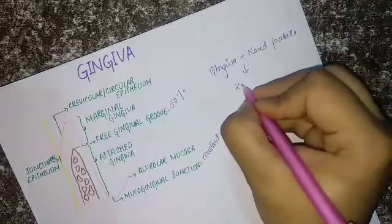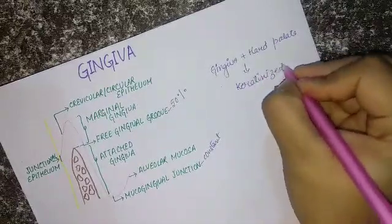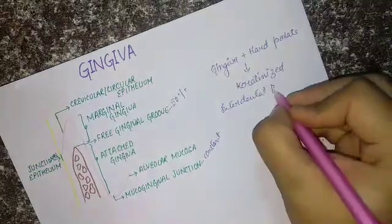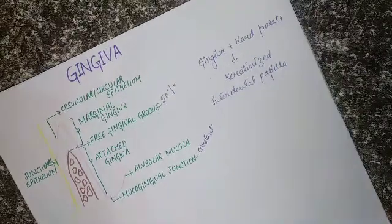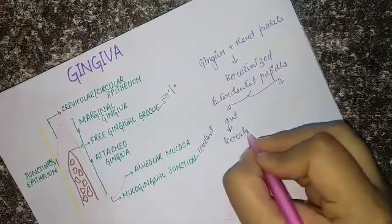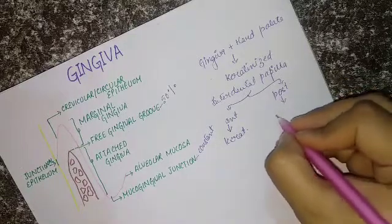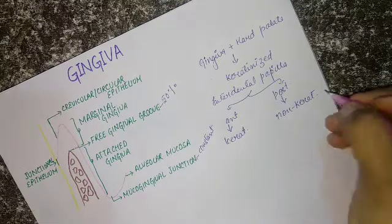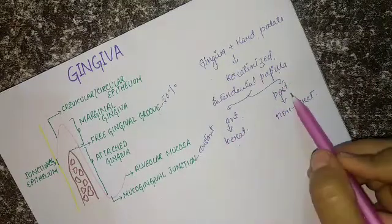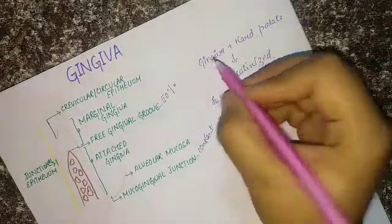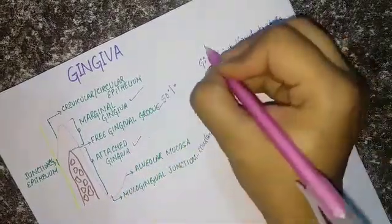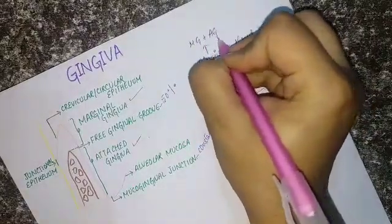The rest of the oral mucosa is non-keratinized. In case of the interdental papilla, in the anterior portion it is keratinized whereas in the posterior portion it is non-keratinized. So to summarize: the gingiva and the hard palate are keratinized. For the interdental papilla, the anterior interdental papilla is keratinized whereas the posterior one is non-keratinized. Within gingiva, both the marginal gingiva and the attached gingiva are keratinized.